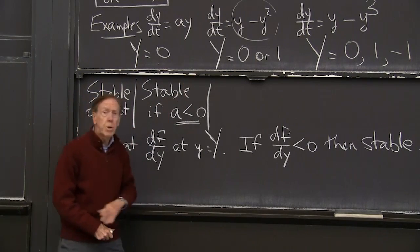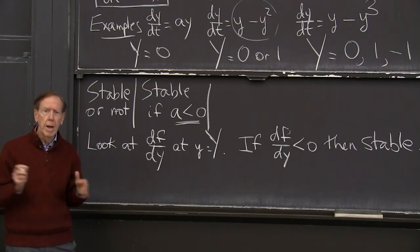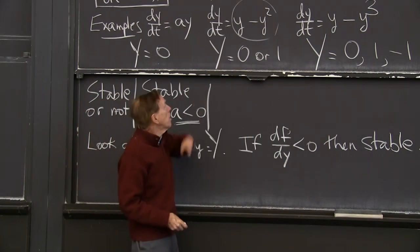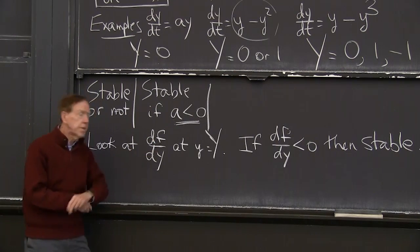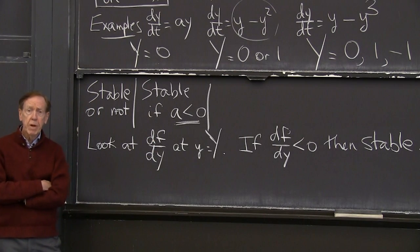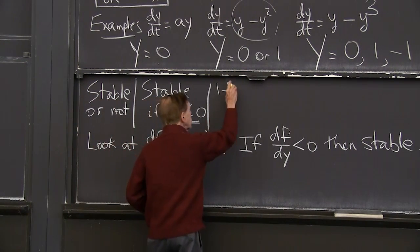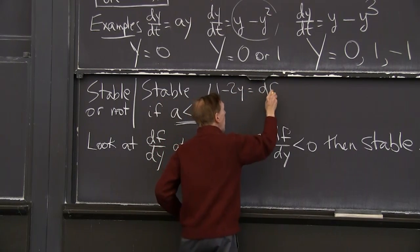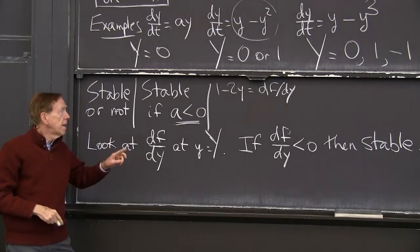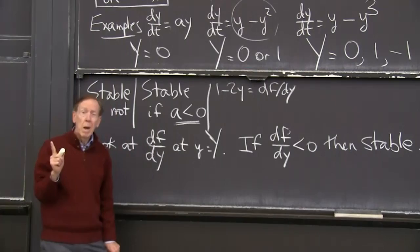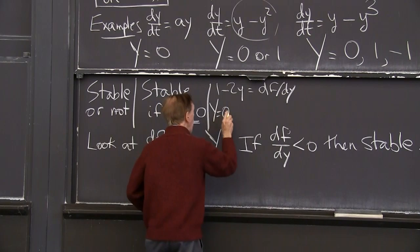What about examples 2 and 3? So with those two examples, you'll see the whole idea. So look at the second example, y minus y squared. f is y minus y squared. We look at its derivative. Its derivative is 1 minus 2y. The derivative of, so I'm looking at 1 minus 2y. That's df/dy. So what's the story on that? If y is 0, then that derivative is 1 plus 1, unstable. So y equals 0 is now unstable.